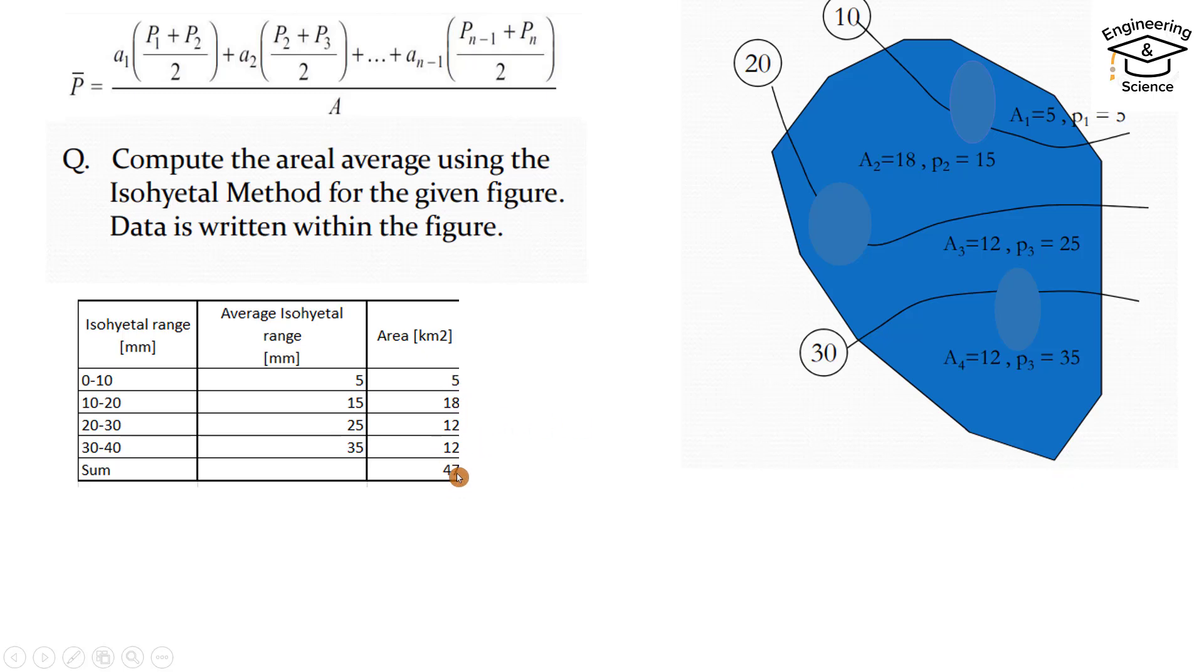Then you have to multiply average isohyetal range by area. So 5 multiply 5 is 25, 15 times 18 is 270, 25 times 12 is 300, 35 times 12 is 420. The summation equals 1015 millimeter kilometer square.